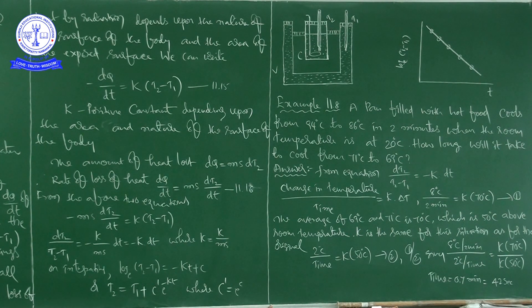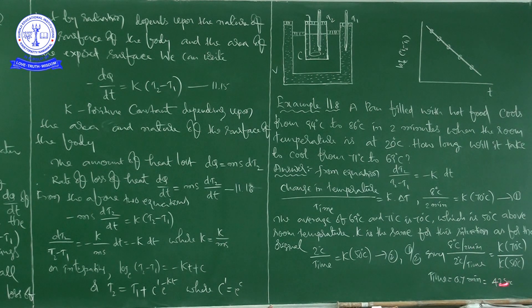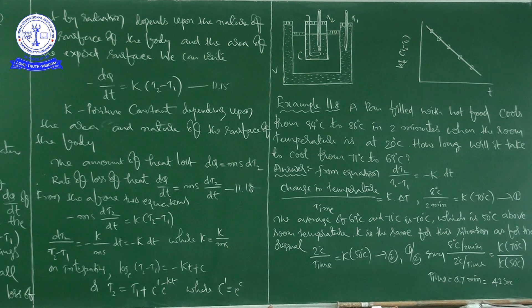Dividing equation 1 by equation 2: (8°C / 2 min) / (2°C / t) = (k × 70) / (k × 50). The k values cancel, and simplifying gives t = 0.7 minutes.